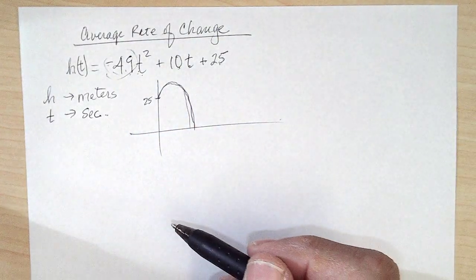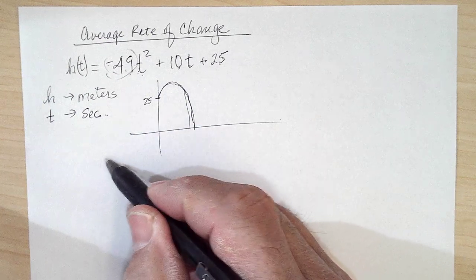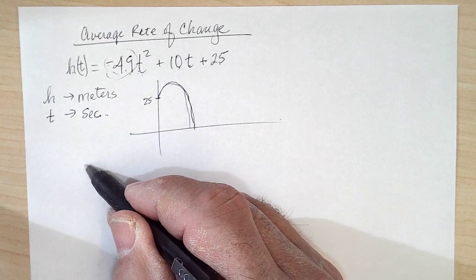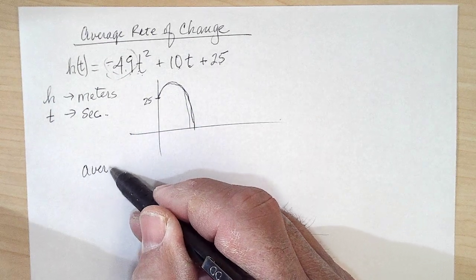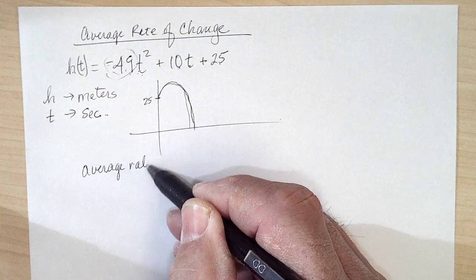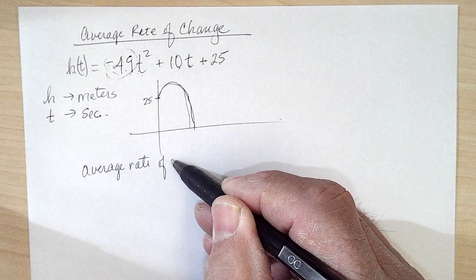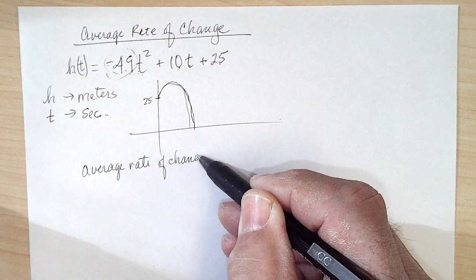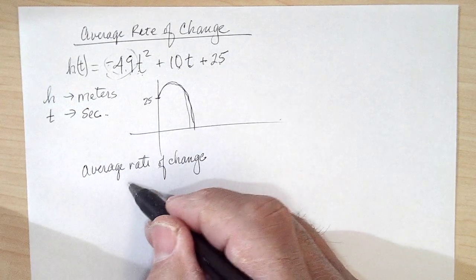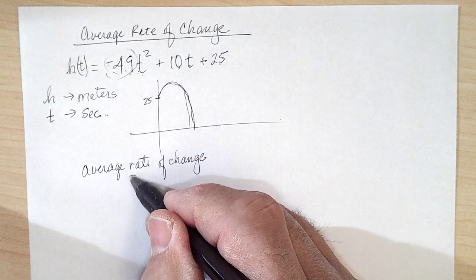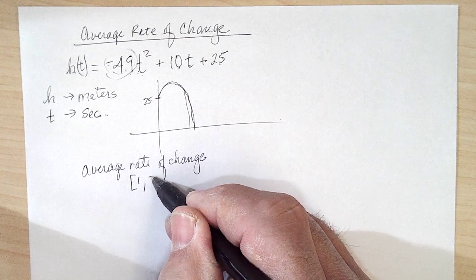Average rate of change. Let's say I asked for the average rate of change on the interval one second to two seconds.